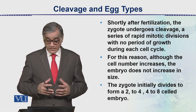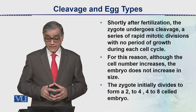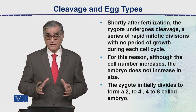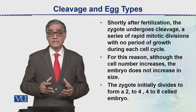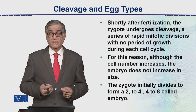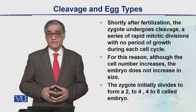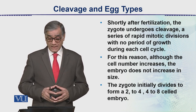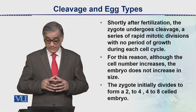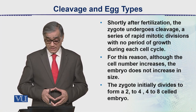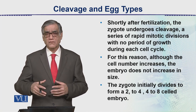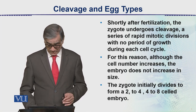For this reason, although the cell number increases, the embryo does not increase in size. In early embryological stages, this overall size does not increase. The zygote initially divides to form 2, 4, 8, or 16 cell stages in the embryo.